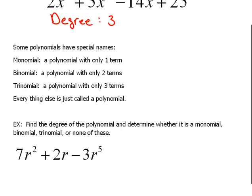For instance, a polynomial that only has one term is called a monomial. A polynomial that has two terms is specifically called a binomial. If we have three terms, we call it a trinomial, and everything else is just called a polynomial.